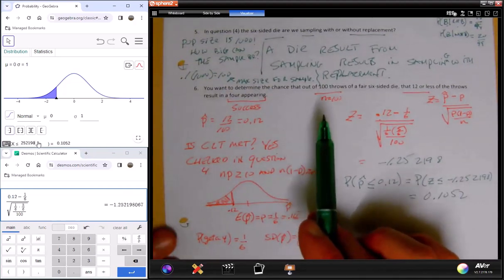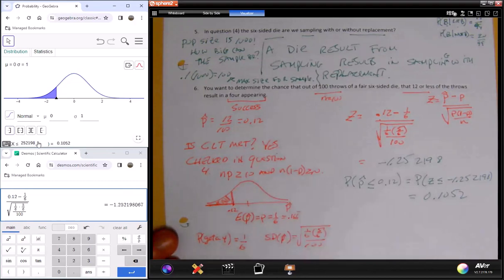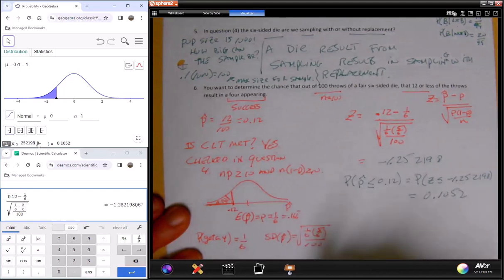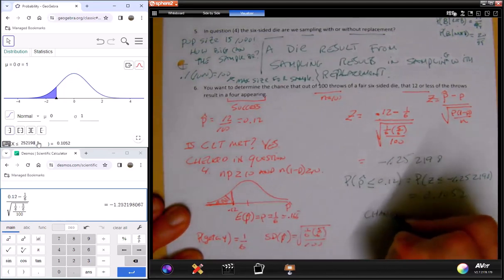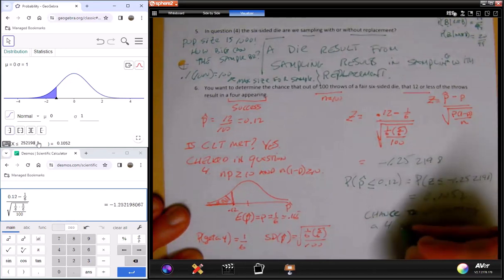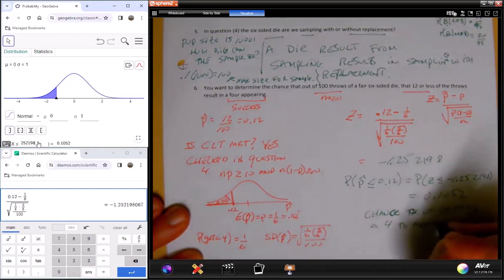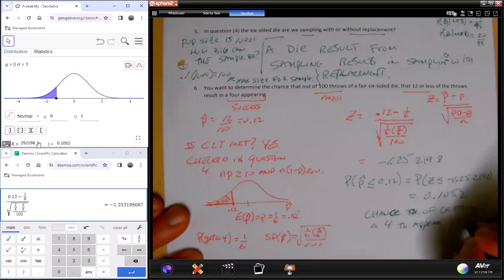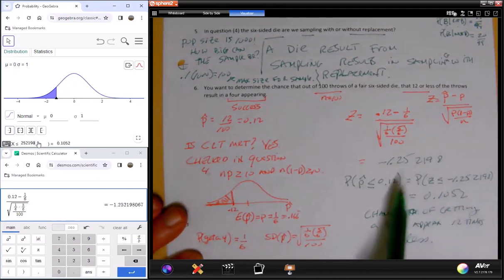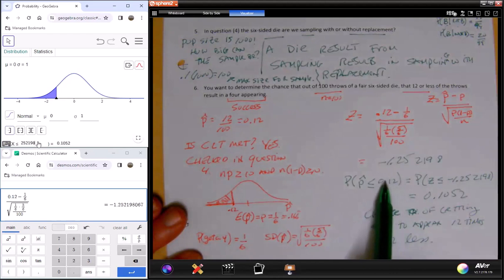So you want to determine the chance out of 100 throws for a fair die that 12 or less of the throws result in a four appearing, and the chance of that is about just about 10.5%. Chance of getting a four to appear 12 times or less. Even though really what we're saying is p-hat is just another proportion, it is itself an approximation to a probability. The chance of getting this probability, that or something even smaller, is about 10.5%.